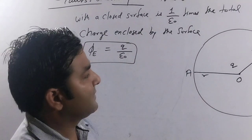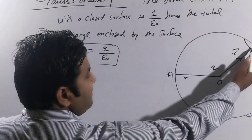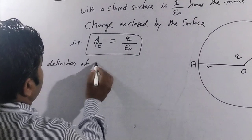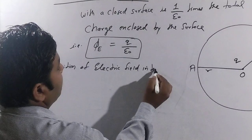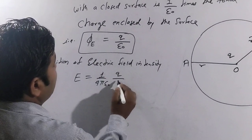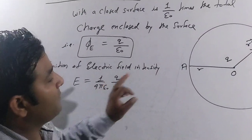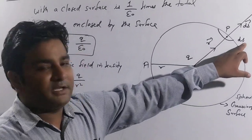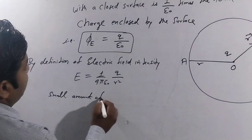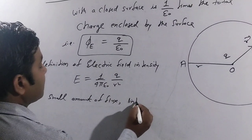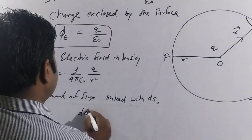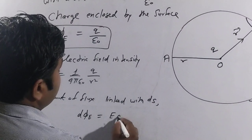Now calculating the electric field intensity. By definition of electric field intensity, E = (1/4πε₀) × (q/r²). With the help of this value of intensity, we can calculate the flux linked with a small area element dS — that is the small amount of flux linked with dS.